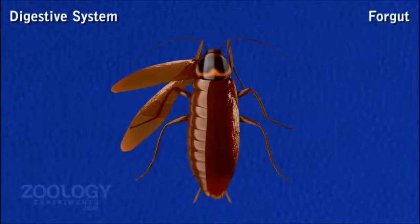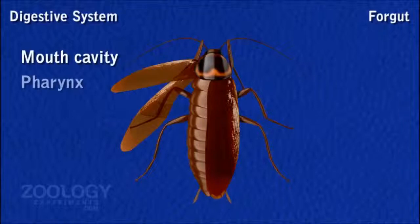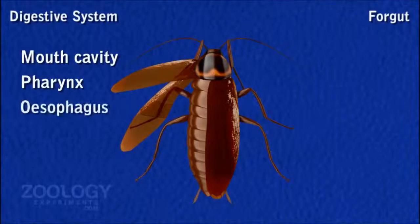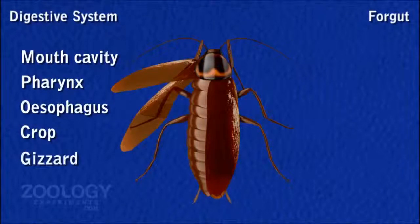Foregut: It includes mouth cavity, pharynx, oesophagus, crop and gizzard.